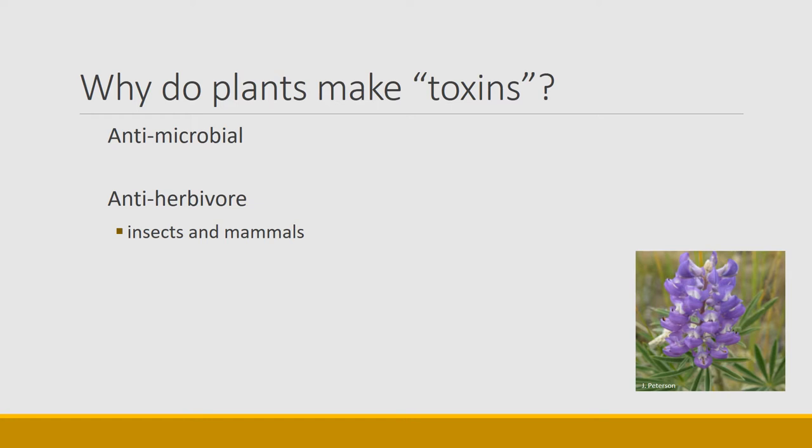Insects are also very important. Many of the compounds found in plants may have been created to slow the impact of insects, even though they still have an effect on mammals. Some compounds are also plant-plant interactions, called allelopathic — plants may create toxic compounds that, once shed onto the soil, slow competition from neighboring plants.